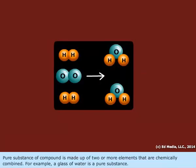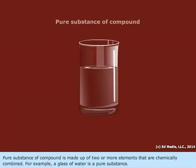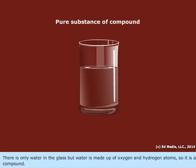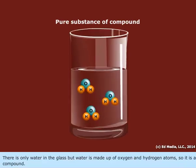Pure substance of compound is made up of two or more elements that are chemically combined. For example, a glass of water is a pure substance. There is only water in the glass, but water is made up of oxygen and hydrogen atoms, so it's a compound.